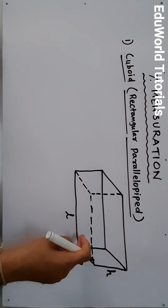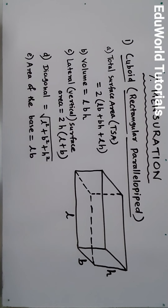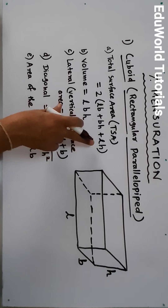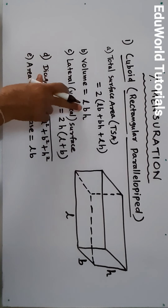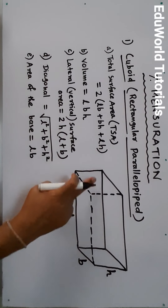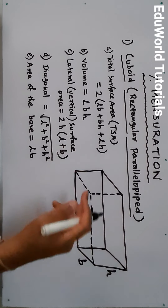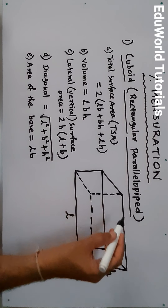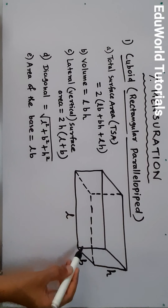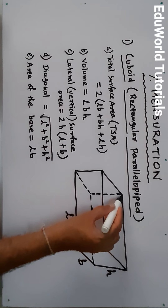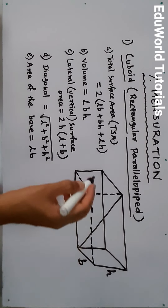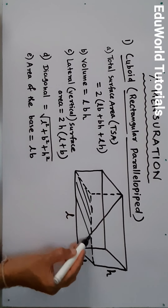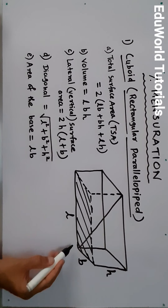We will see various formulas based on this figure. TSA (total surface area) = 2(LB + BH + LH). Volume = L×B×H, length into breadth into height. Lateral surface area — the four vertical surfaces — is 2H(L + B). Diagonal is the longest road inside the cuboid from one top corner to the opposite bottom corner: √(L² + B² + H²). Area of the base is L×B, since the base is a rectangle.